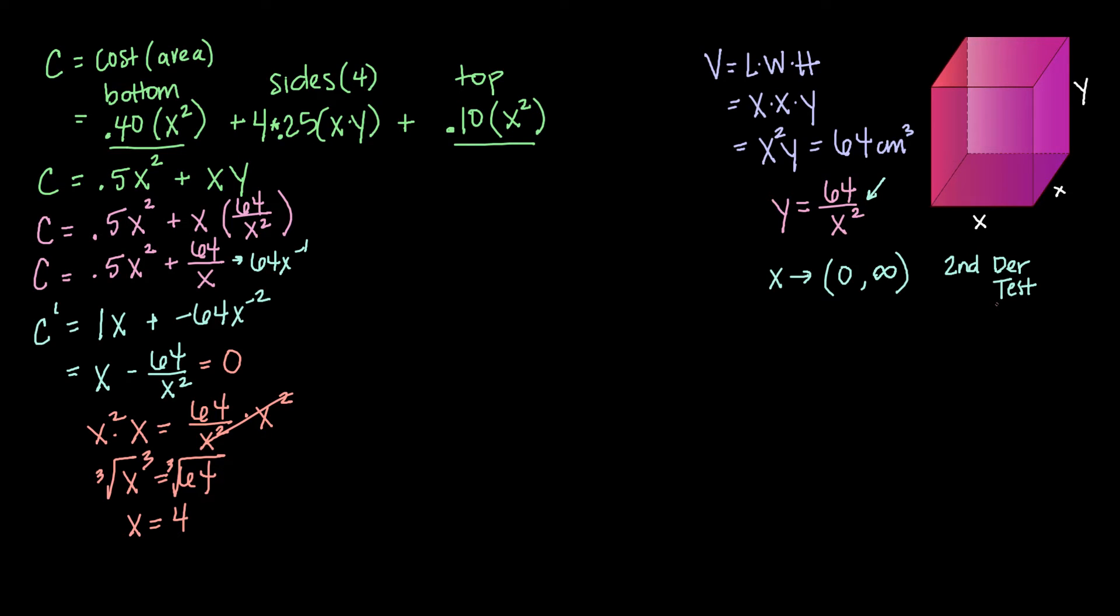Now with the second derivative test, when we have a critical point of the first derivative that has our derivative equal to 0, we look at the sign of the second derivative to tell whether we have a minimum or a maximum. So I'm going to need my second derivative, c double prime. So my derivative for 1x will be 1, plus my derivative for negative 64x to the negative 2 will be negative 64 times negative 2 or positive 128x to the negative 3. Or we might think of that as 1 plus 128 over x cubed.